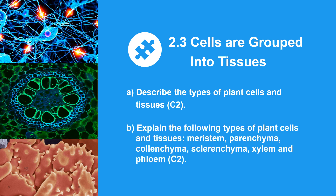Part B: explain the following types of plant cells and tissues — meristem, parenchyma, collenchyma, sclerenchyma, xylem and phloem.